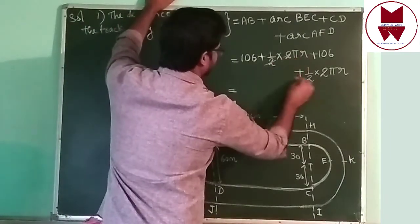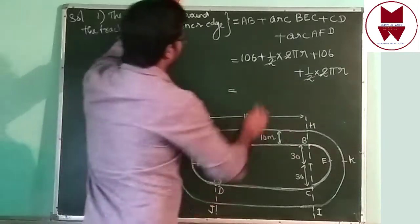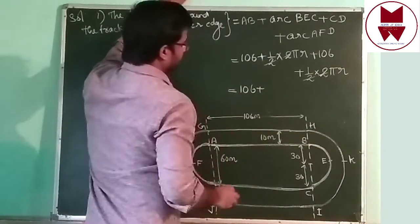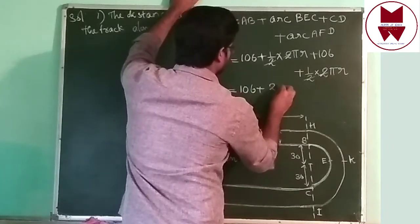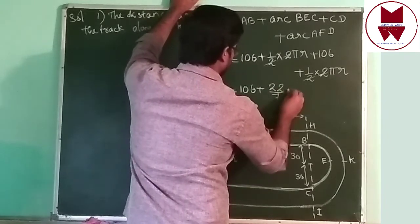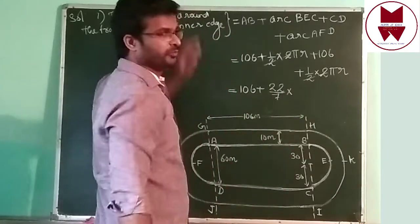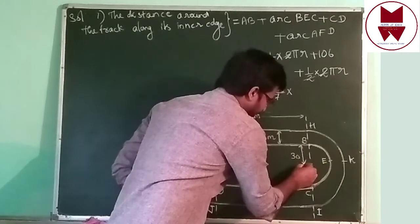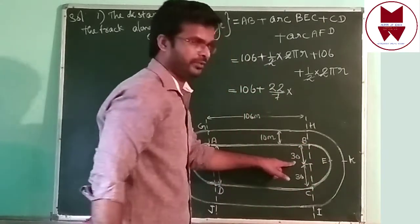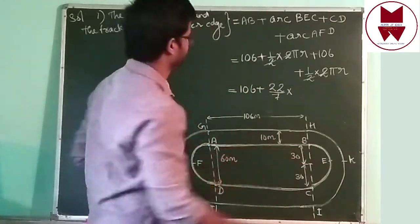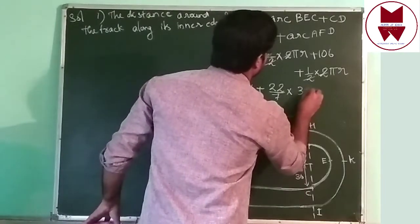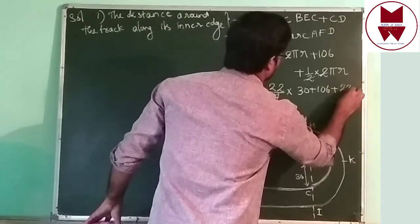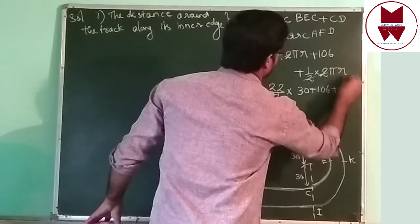The 2s cancel. Then 106 plus 22/7 into radius. The radius of this semi-circle is from the center up to here — that is 30. So 30 plus 106, then 22/7 into 30.